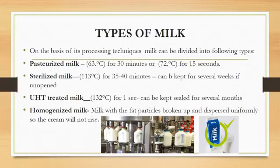Homogenized milk is treated in a way that the fat molecules are broken down into very small particles. The particles are so small that they are evenly and uniformly dispersed in the liquid, so that we cannot separate the fat from it — unlike with fresh milk. When we heat fresh milk, the fat layer comes to the top. With homogenized milk, this does not happen because the fat is evenly and uniformly dispersed.